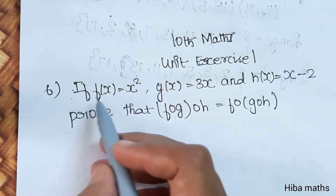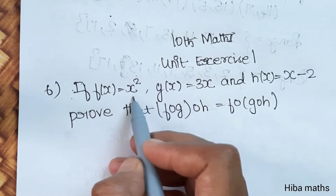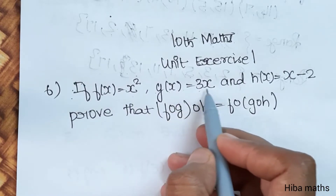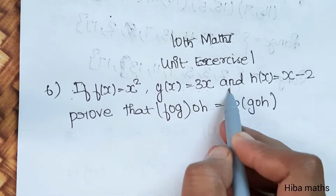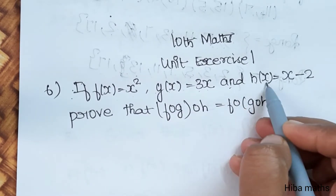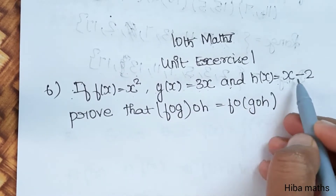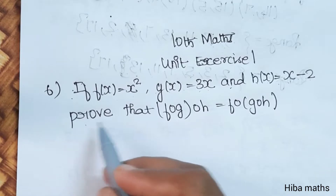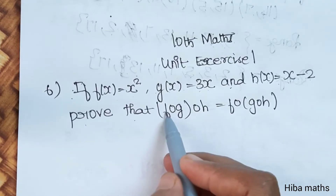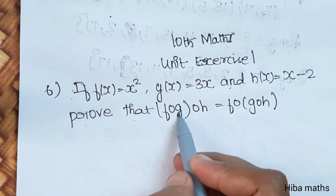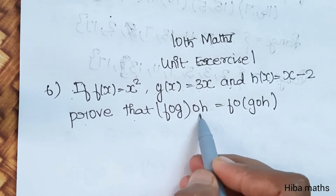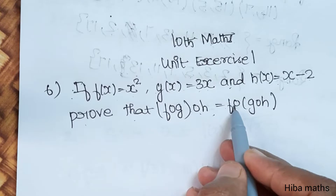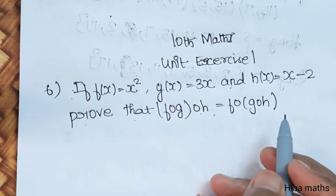If f of x is equal to x square, g of x is equal to 3x, and h of x is equal to x minus 2. Prove that f of g of h is equal to f of g of h.